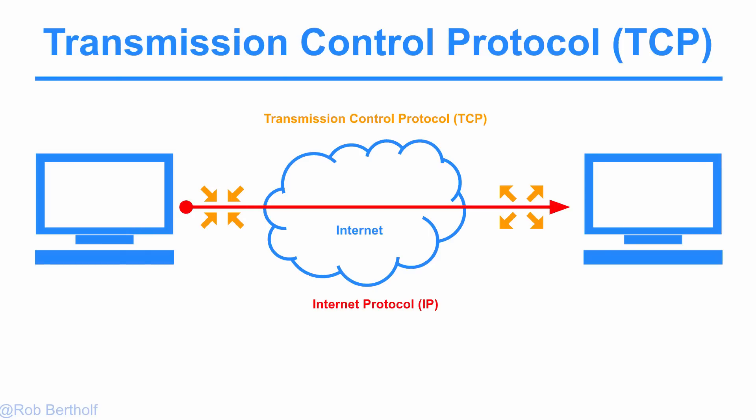TCP/IP often comes before IP, so you'll frequently hear TCP slash IP. TCP is Transmission Control Protocol. Really, all this does is it shrinks the packet before it goes out, then expands and assembles it again once it arrives.